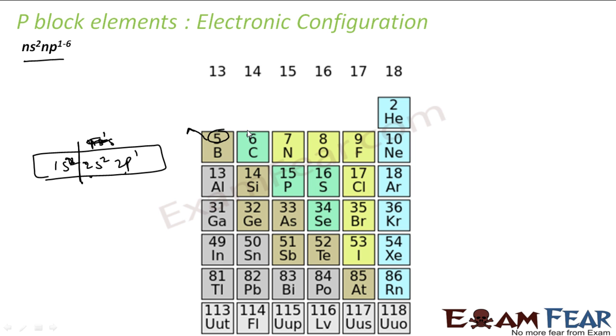For example, if you talk about boron, this becomes 1s2, 2s2 and 2p1. See, 2 plus 2 is 4, plus 1 is 5. If you ignore this, the last part is ns2 np1. Similarly, carbon, this is 1s2, 2s2, 2p2. So if you ignore this part, this is ns2, np2. It is following this part.